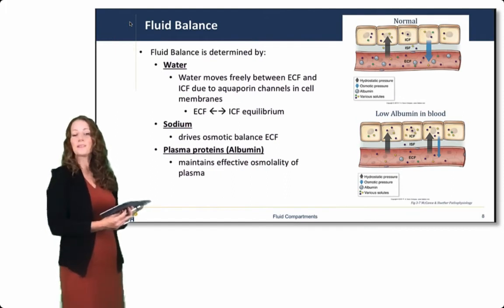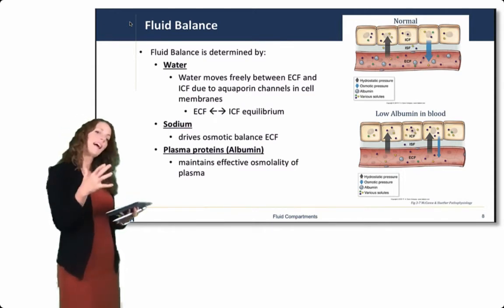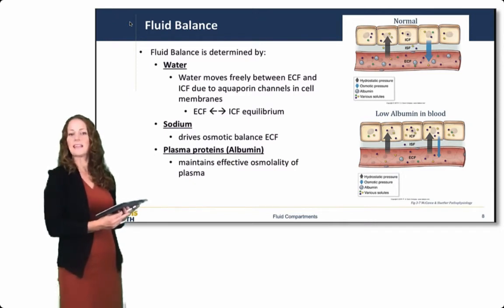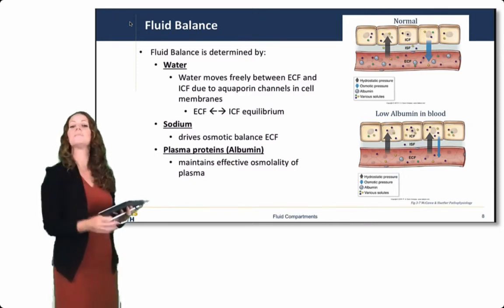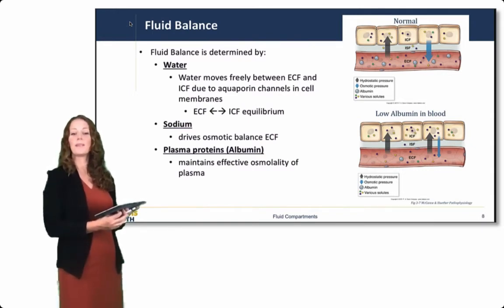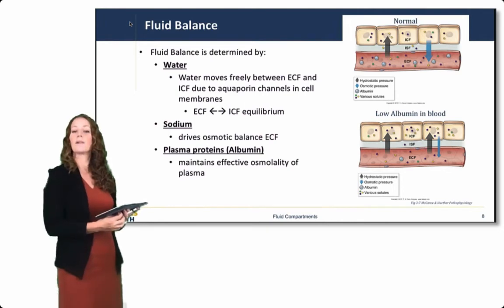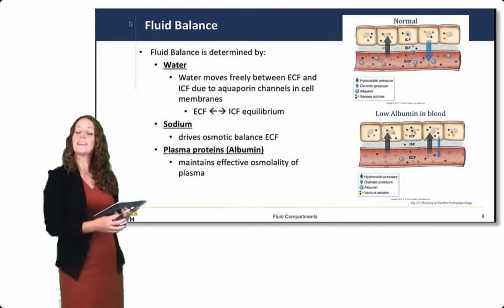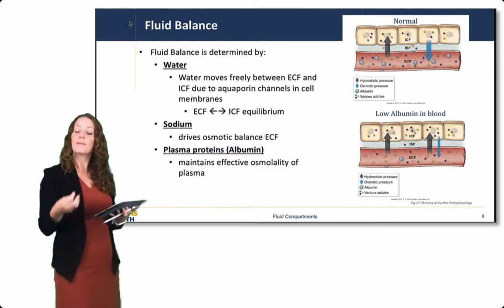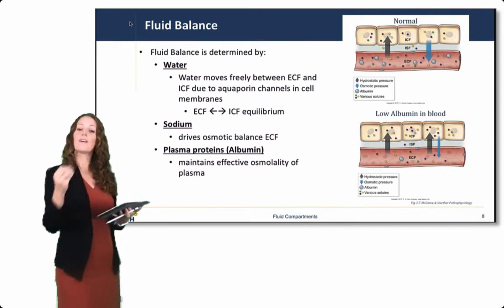Fluid balance is determined primarily by water, sodium, and plasma proteins. Water moves freely between the ECF and the ICF because there are numerous aquaporin channels in the cell membrane that allow water to pass freely. Those aquaporin channels, if present, are always open, meaning that the ECF and ICF can reach an equilibrium with respect to water balance. In the upcoming sodium lecture, you will see that sodium is the primary electrolyte in the ECF, so the amount of sodium drives the osmotic balance in the extracellular compartment.